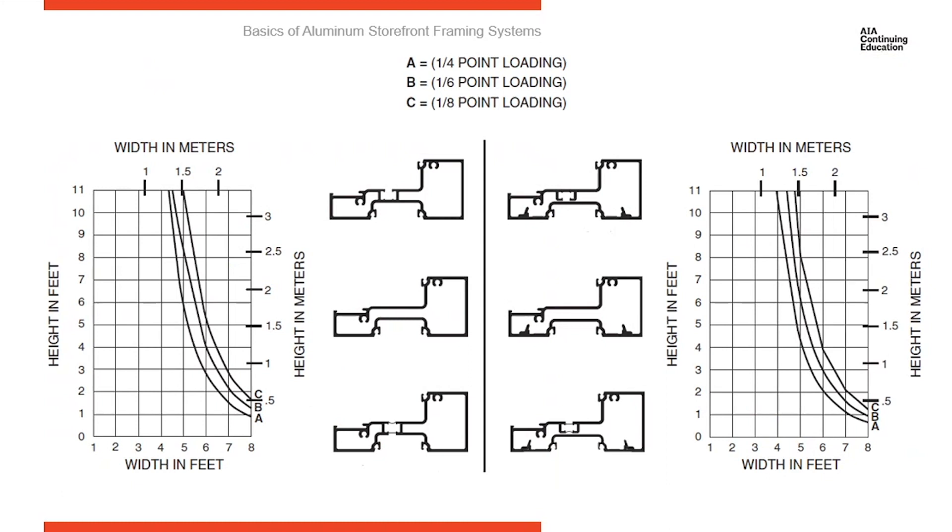So all manufacturers can have charts like this. This is a dead load chart. And the way you use this is you look at the width of the glass across the bottom and then the height of the glass going up vertically. And where those two lines meet each other, the curves A, B, C represents the setting block locations. A is quarter point, B is sixth point, and C is eighth point. So check the weight of the size of the glass and determine what setting point you need to have for your setting blocks.